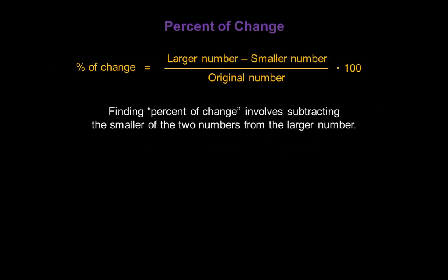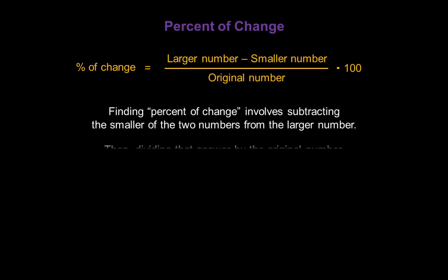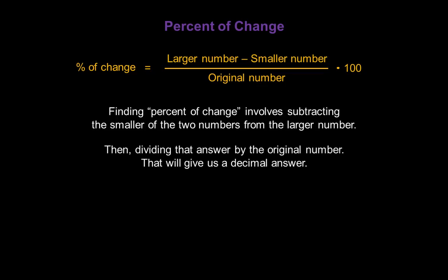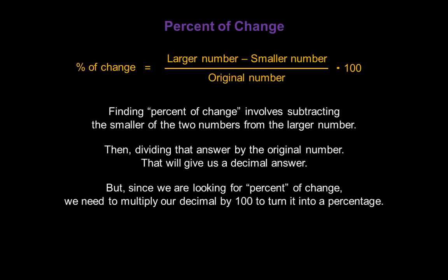Finding percent of change involves subtracting the smaller of the two numbers from the larger number. Then we divide that answer by the original number, or the number that's changing, and that gives us a decimal answer. But since we're looking for percent of change, we need to multiply our decimal by 100 to turn it into a percentage.